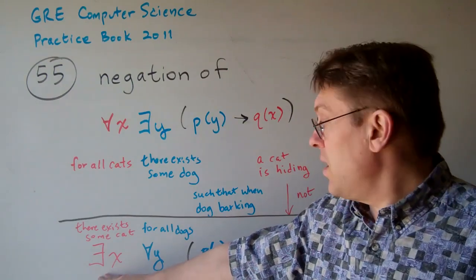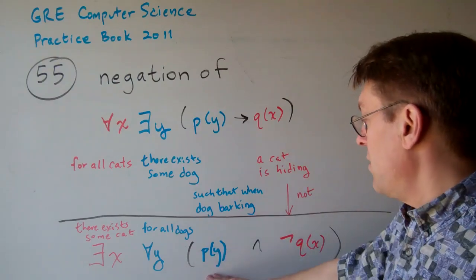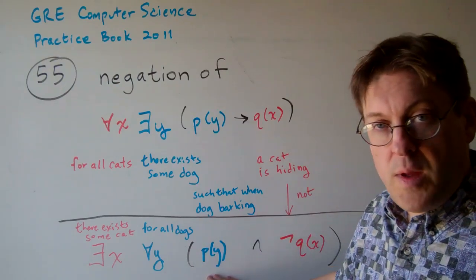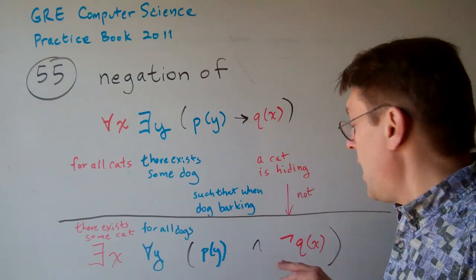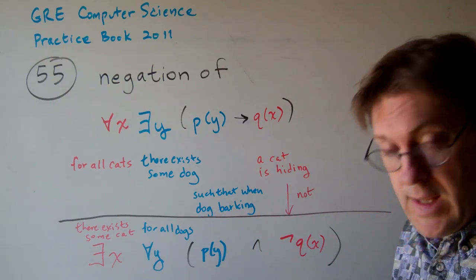For every x, sorry, there exists some x for every y such that p of y and not q of x is true. So that is option E.